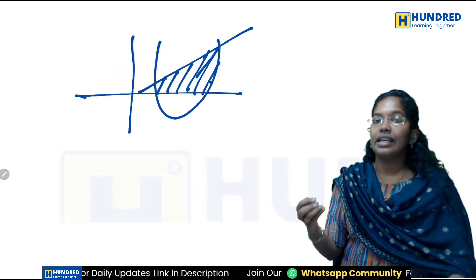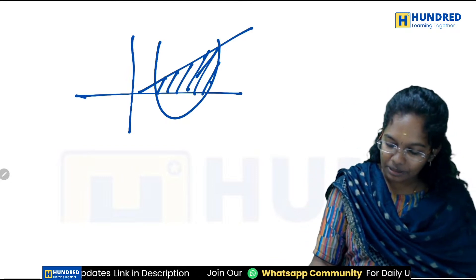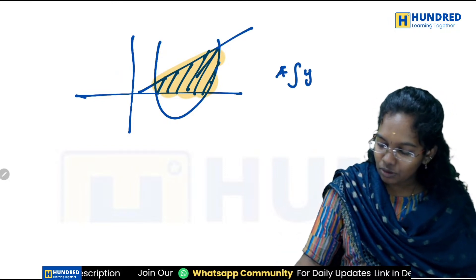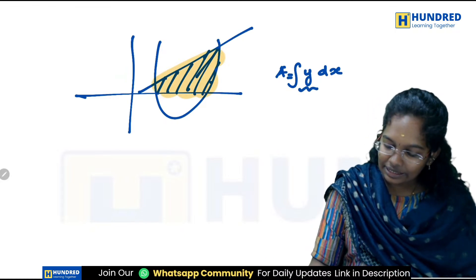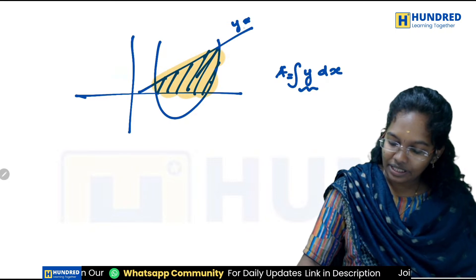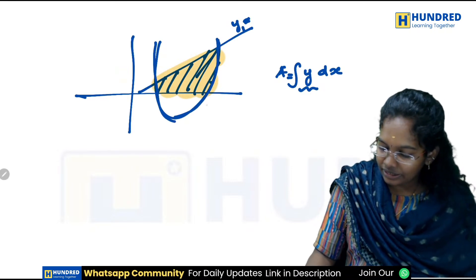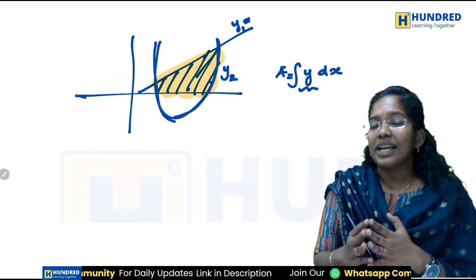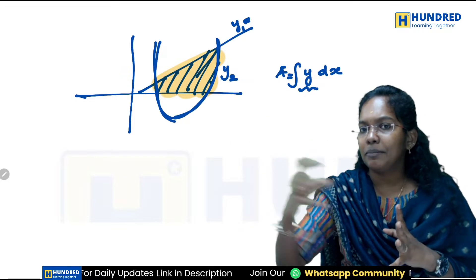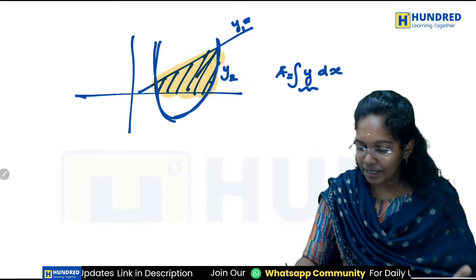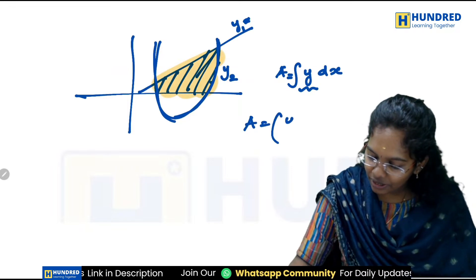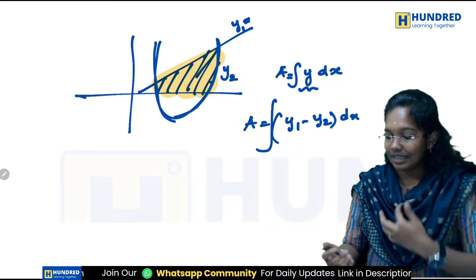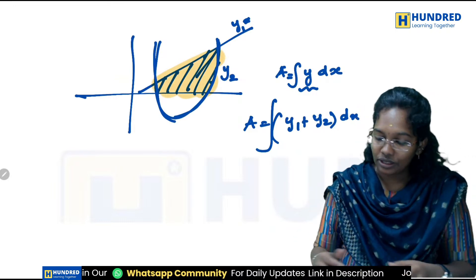If my area involves a parabola and a straight line, and you need to find that enclosed area, substitute into the area formula as integral y dx since it is above the x-axis. Since I have two y values — y1 (straight line) and y2 (curve) — I need to determine which curve is on top. If y1 is on top and y2 is on the bottom, write it as integral of (y1 minus y2) dx.